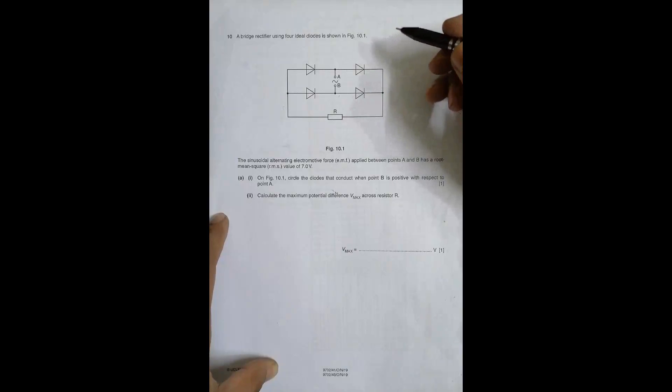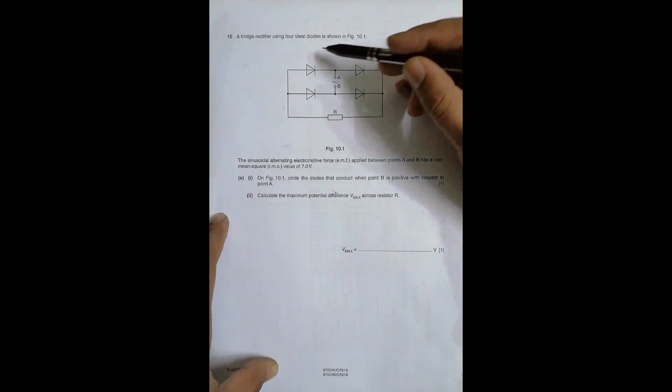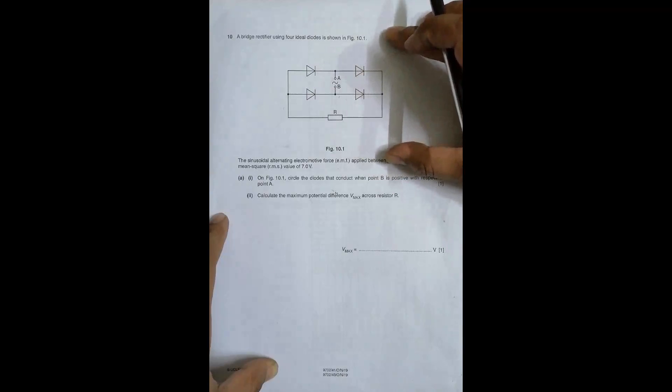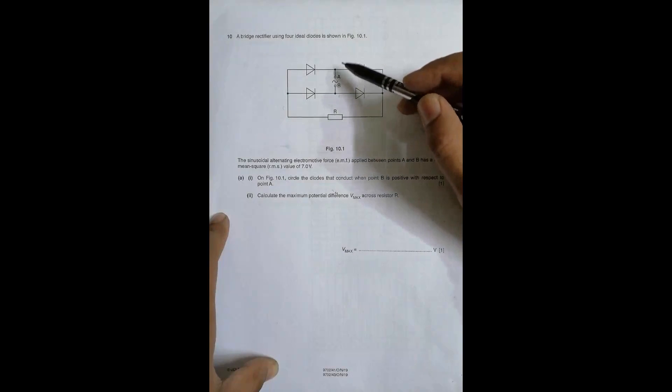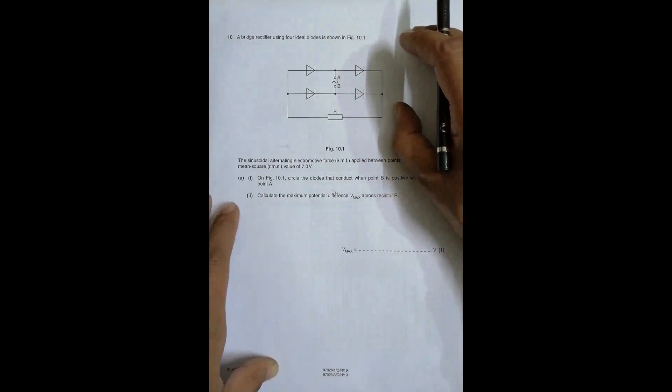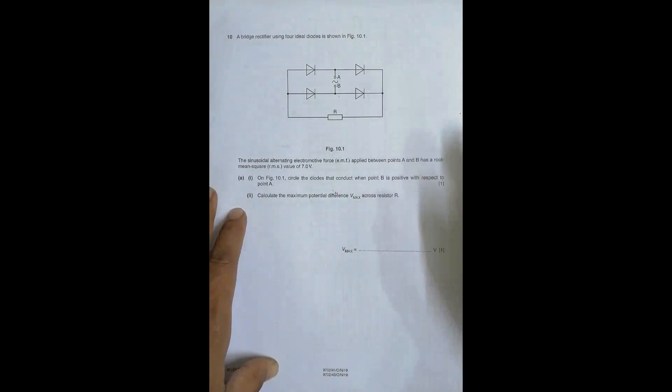So this question is about alternating current here. A bridge rectifier using four ideal diodes is shown in figure 10.1. So this is the bridge rectifier. So this diagram is slightly odd compared to the diagram that has been used in textbooks. So there it was like a shape of a rhombus but here they are showing it the shape of a rectangle but anyhow whatever the shape may be the main theme is the same.